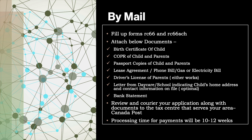For the mail method, two forms need to be filled out: forms RC66 and RC66 SCH. The documents required to be attached are: birth certificate of your child, COPR of the child and parents, passport copies of the child and parents, and if you've rented a house, your lease agreement. If not, you can provide a phone bill, gas bill, or electricity bill — whatever is available — just to prove that you are a resident of Canada.